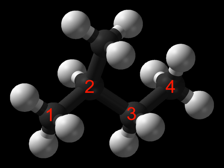In an alkane, each carbon atom is sp3 hybridized with four sigma bonds — either C-C or C-H — and each hydrogen atom is joined to one of the carbon atoms in a C-H bond. The longest series of linked carbon atoms in a molecule is known as its carbon skeleton or carbon backbone. The number of carbon atoms may be considered as the size of the alkane.